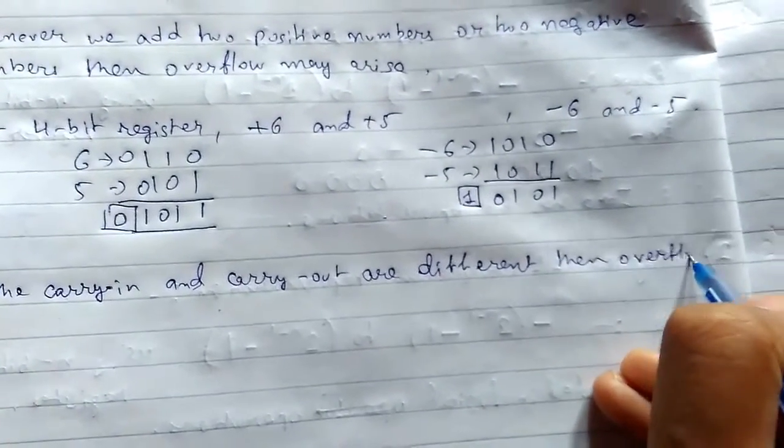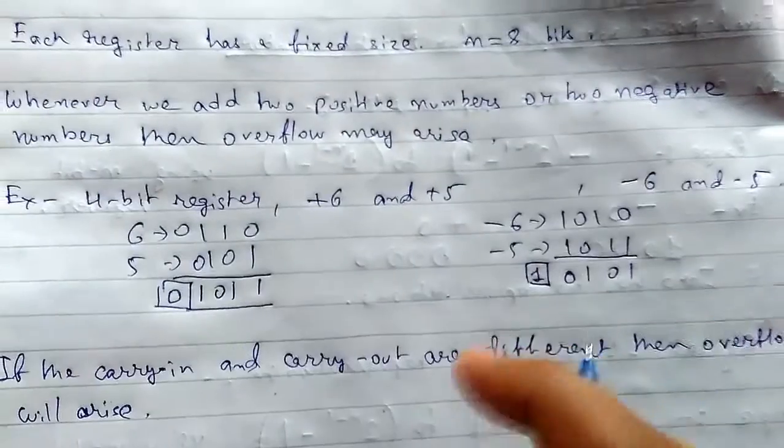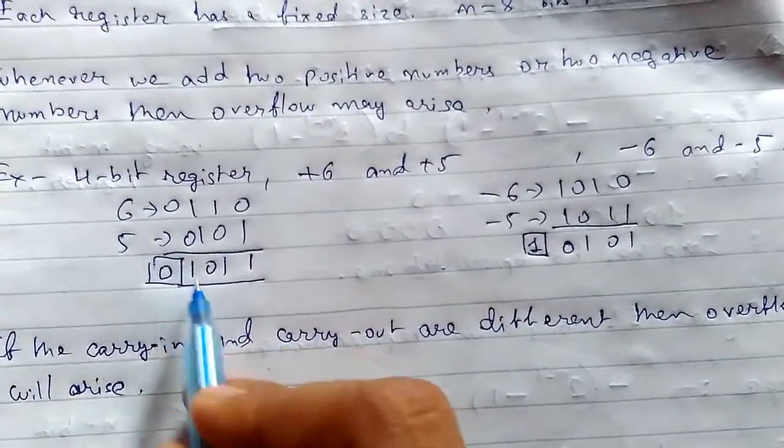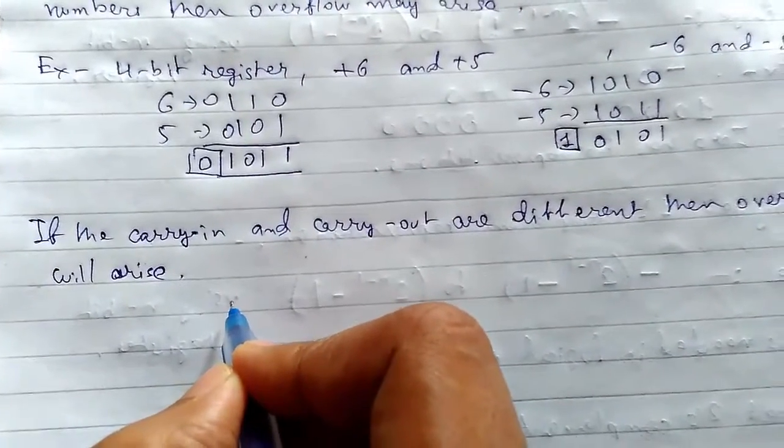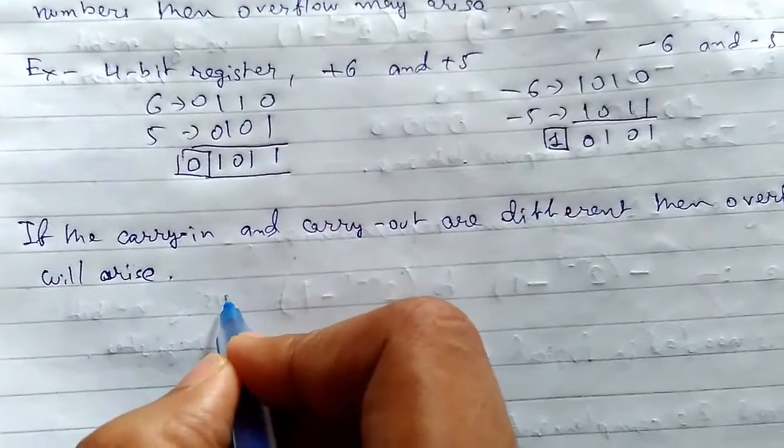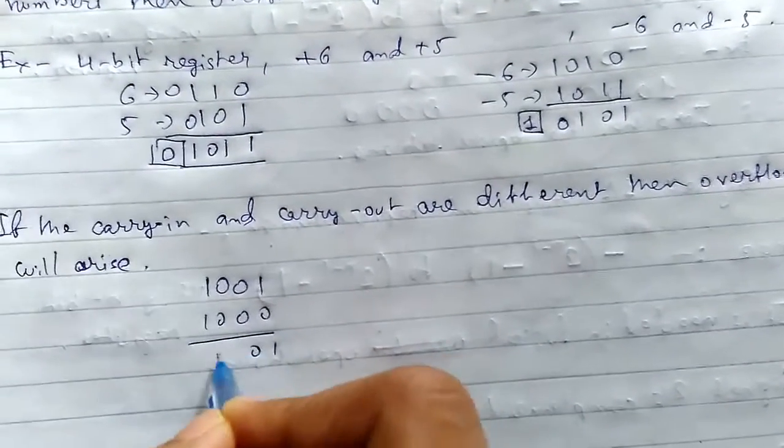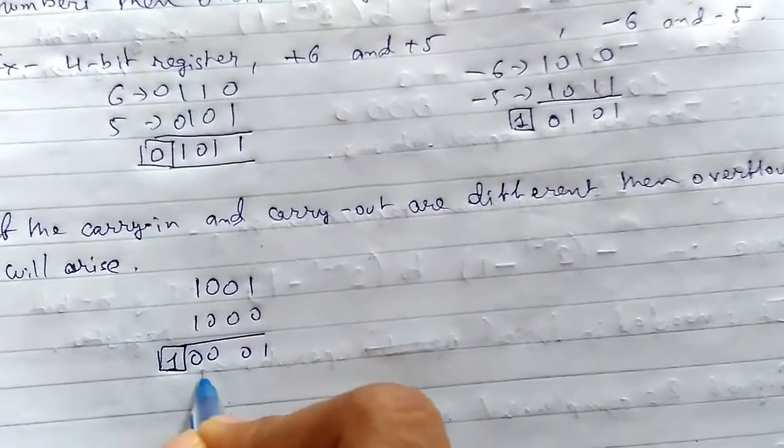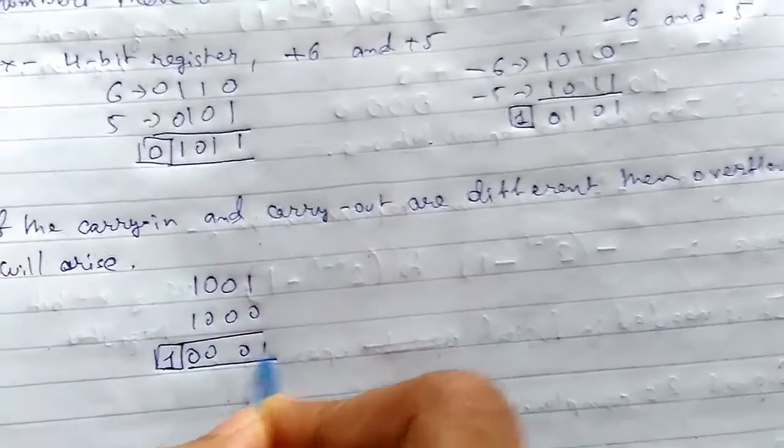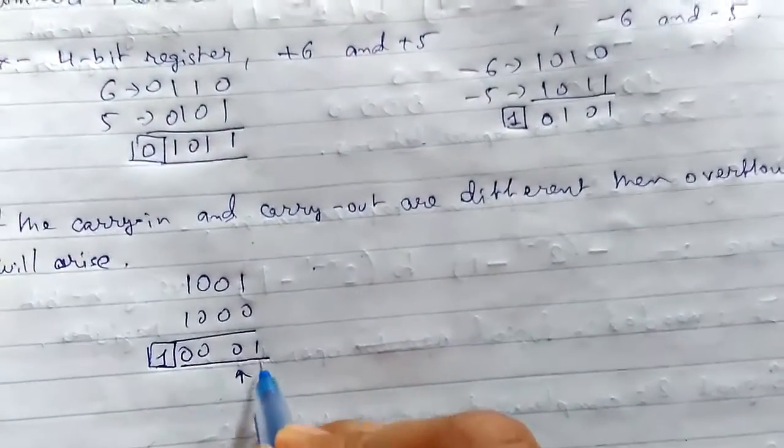This can be easily represented in four bits. Suppose we add 9 and 8. Considering a 4-bit register, the magnitude appears to be 1.